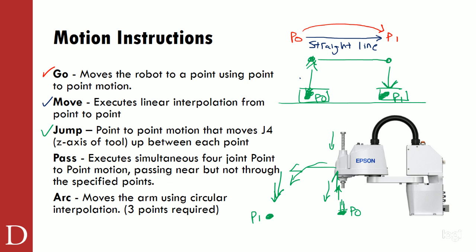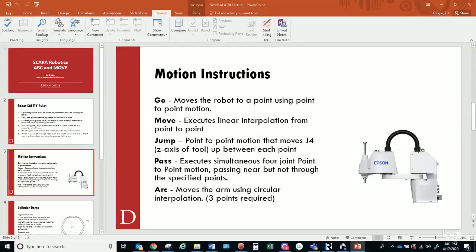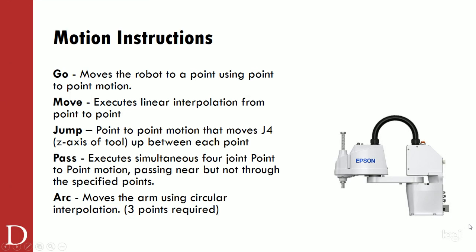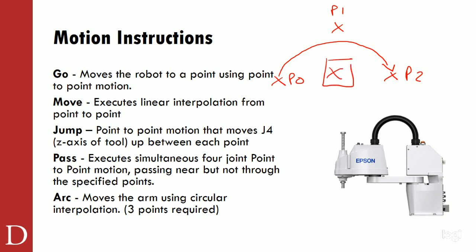The PASS instruction is a little different. Let's say you're going from point zero to point two. The PASS instruction on point one says you don't need to necessarily reach that point — you go kind of towards it and around. This might allow you to avoid an obstruction and get around there without physically going to that point, but that point pulls you in that direction. A GO would use the fastest motion possible, but if we don't know what that path is, the PASS really allows us to define that path a little bit.